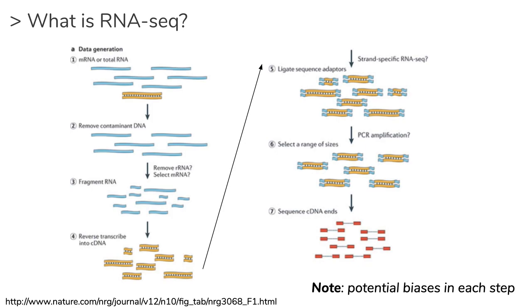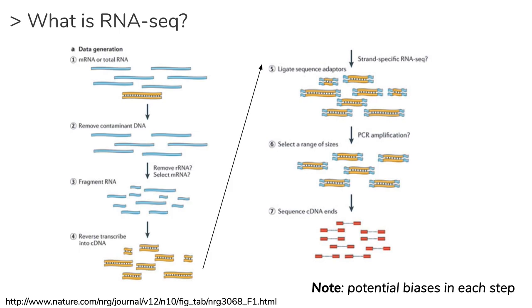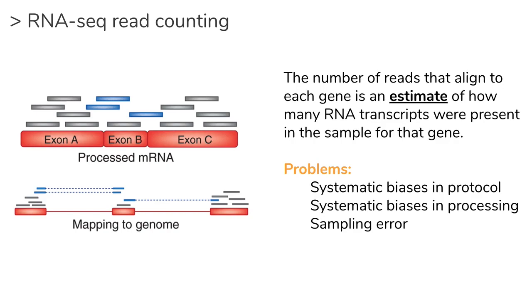We then ligate sequencing adapters — certain concentrations of ligase and adapters may mean certain molecules don't ligate as well as others. After another round of size selection, we're essentially sequencing the ends of these cDNA molecules made from RNA. This is a multi-step process; each step can have biases that affect the ultimate counts we observe for a given gene. Once we have those sequences, we get a FASTQ file — the output of sequences from a DNA sequencing run — which we then align to a genome or transcriptome to get counts.